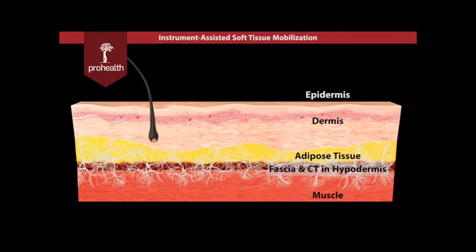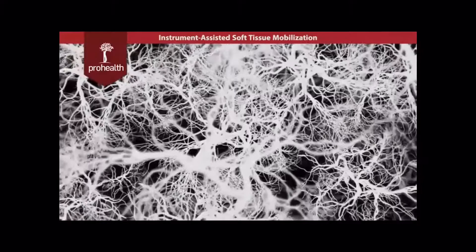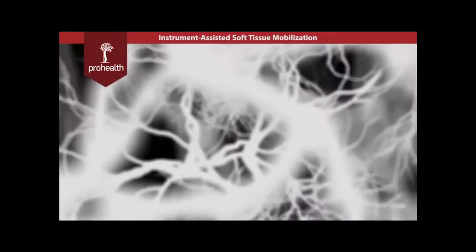Between muscles, skin and bone, there are layers of fibrous connective tissue called fascia. This fascial connective tissue is primarily made of collagen fibers and designed to stabilize and allow flexibility of tissues such as muscles, ligaments, skin and other internal structures.